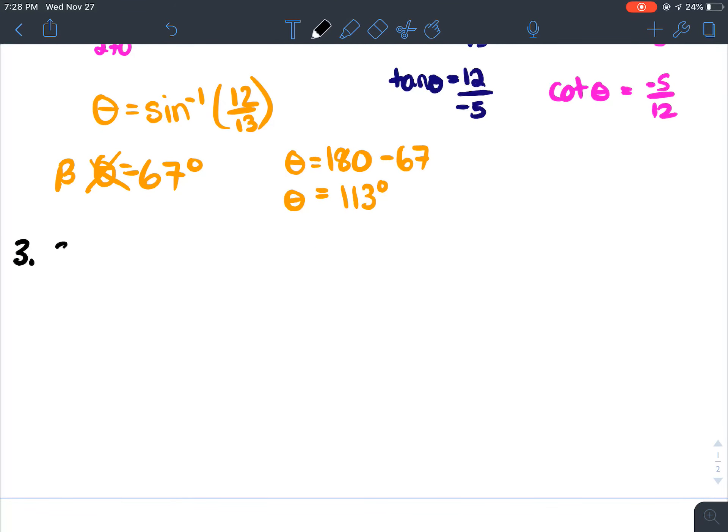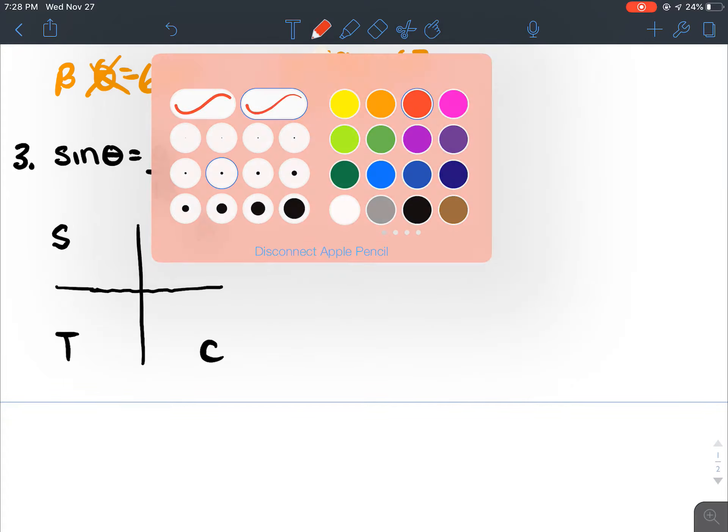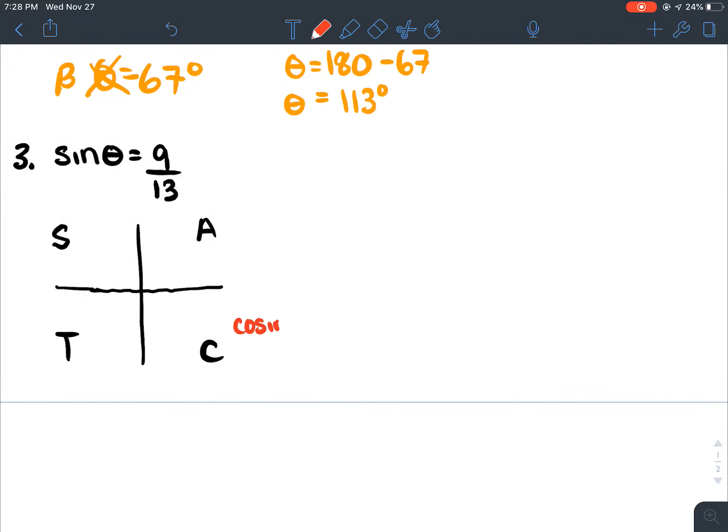Question three. Sine theta is equal to 9 over 13. So it wants you to find two values for theta. So right off the bat, I know already that if we look at our cast rule, what the cast rule tells us is that cosine is the only positive ratio here. All are positive here.